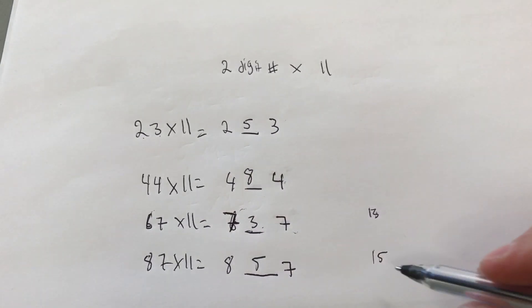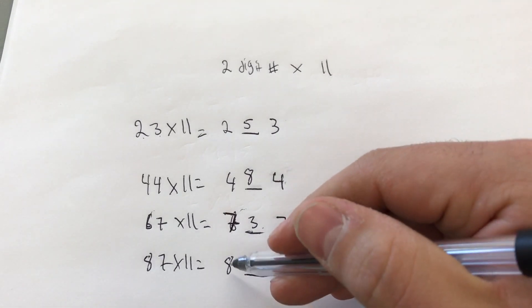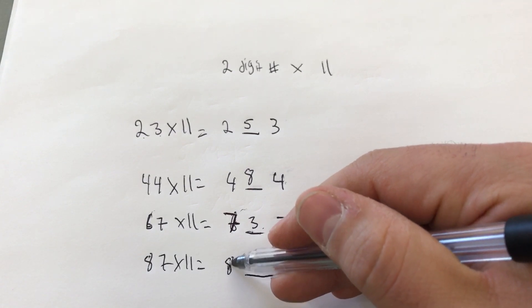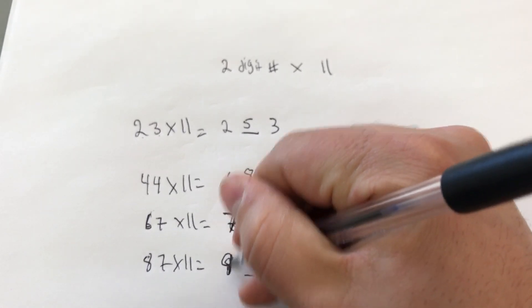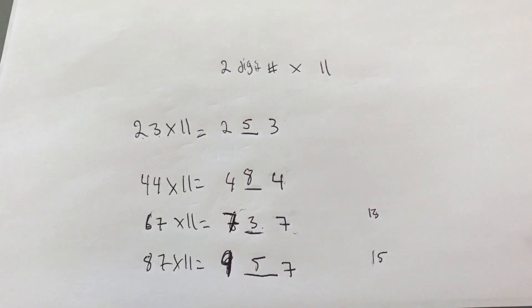And then we take the 1 and we add it to the 8 over here, to the first digit in this answer, which brings us to 9. So the answer would be 957.